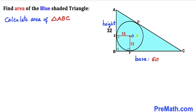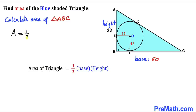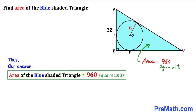Let's calculate the area of this blue shaded triangle ABC. Recalling the area formula: Area = ½ × base × height. The area is ½ × 60 × 32, which simplifies to 960 square units. So the area of this blue shaded triangle ABC turns out to be 960 square units.